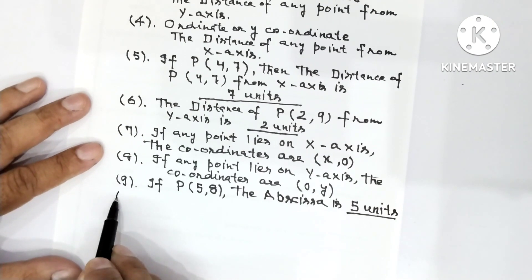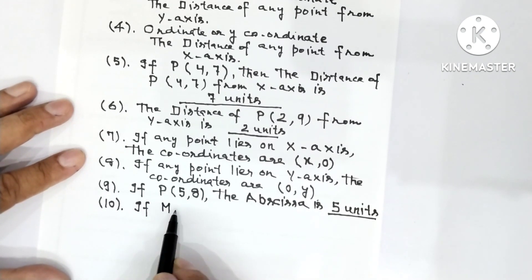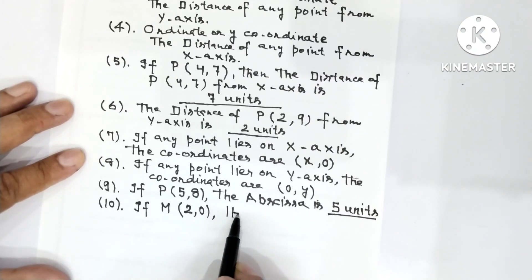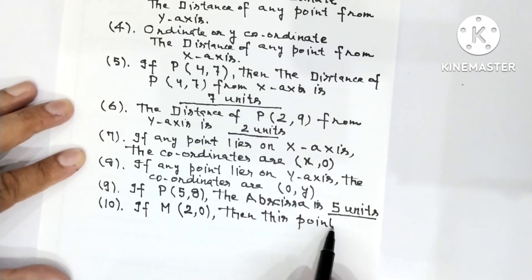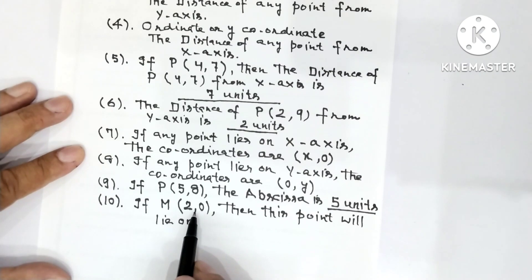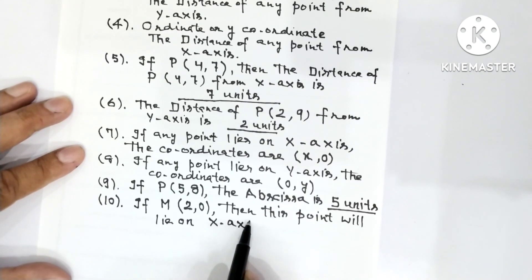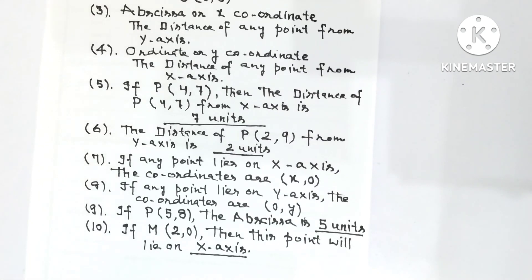That was the introduction to graphs question. Now the tenth question: if a point M has coordinates (2, 0), then this point will lie on — the ordinate is zero and the abscissa is a real number, so it will lie on the X-axis. This way, whatever question is asked, if your basics are clear you can easily answer it. Hope you have understood all these questions explained in the video. Thank you.